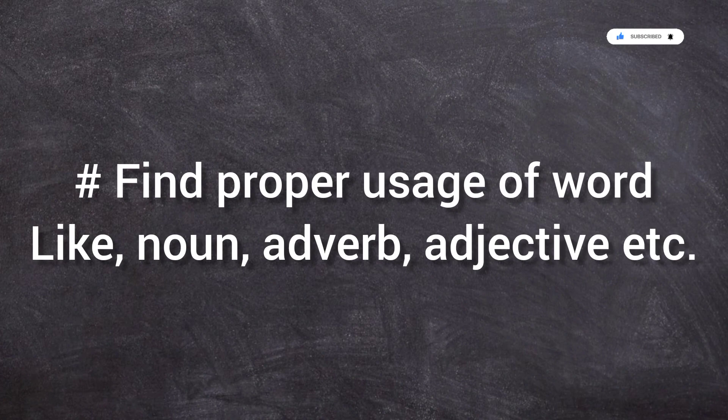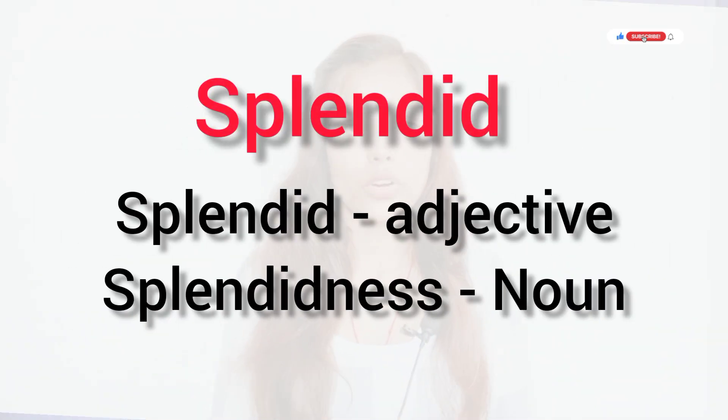The next tip: whenever you are learning a vocabulary, find its proper usage — how it is used as an adjective, adverb, or what are the different forms of that word. Because if you know this, it will be really helpful for you to use that particular word in different situations and sentences. It can expand your thinking and your speaking skills as well. Once you know the proper uses of a word, you can easily use it to explain different situations.